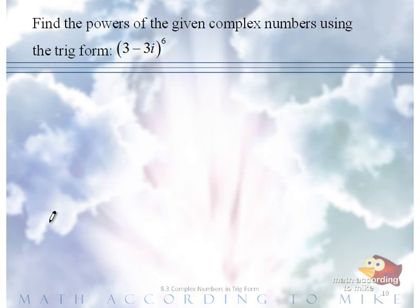Find the powers of the given complex numbers using the trig form. 3 minus 3i raised to the 6th power.